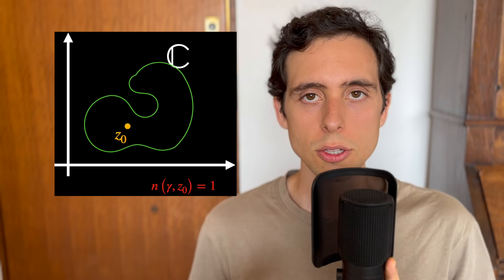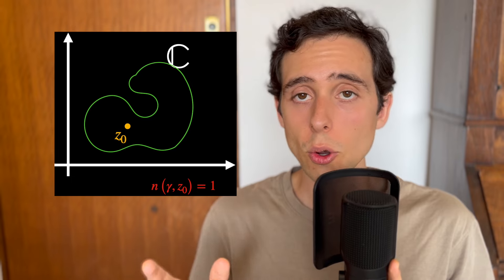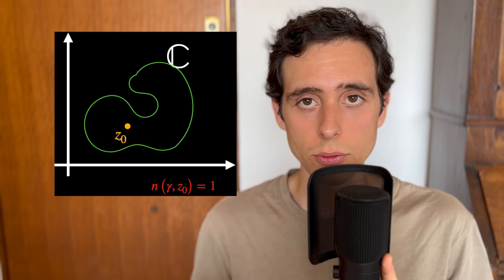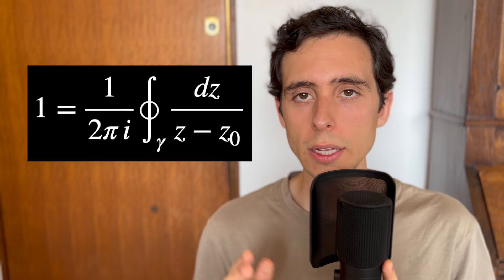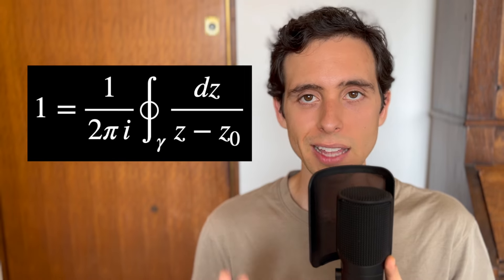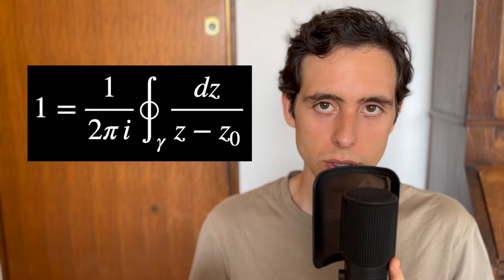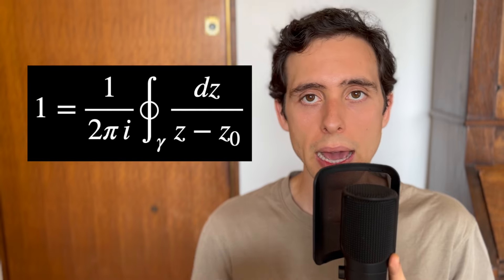Now, without loss of generality, in other words, to not overcomplicate things in an unnecessary way, let's assume the winding number of our curve is 1. So it's just a simple loop that goes around our point z0 just once, and that is oriented in the counterclockwise direction. In this particular case, we have 1 = 1/(2πi) times the line integral over this closed curve of dz/(z - z0).